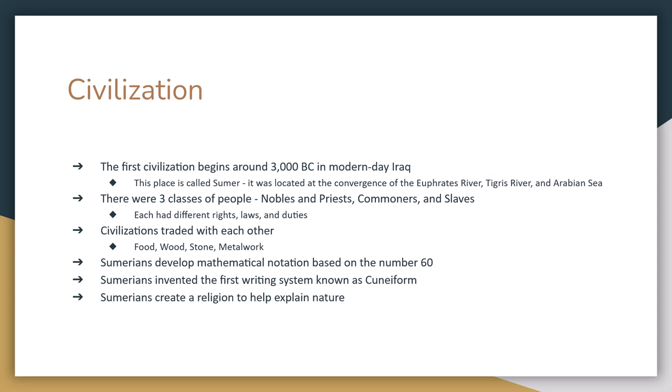Trade moves from the village level to the civilization level. The Sumerians develop a form of math we still use today — Sumerian math is based on the number 60. Think about it: 60 seconds to a minute, 60 minutes to an hour, 24 hours to a day (a multiple of 60), 3 feet in a yard, 12 inches in a foot, and 360 degrees in a circle — all factors or multiples of 60. The Sumerians also invent cuneiform, the first true written language, and they are among the earliest people to develop an organized religion, used to help them understand nature.